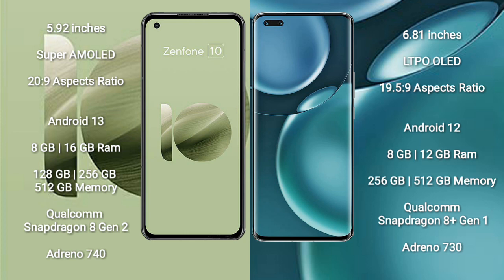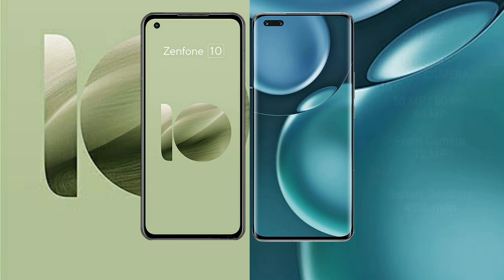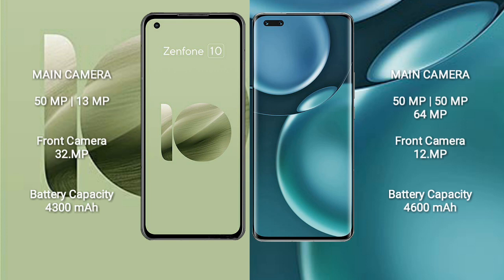Honor Magic 4 Pro comes with 8GB or 12GB RAM and 256GB or 512GB internal storage. It runs on the Android 12 operating system with a Qualcomm Snapdragon 8 Gen 1 processor and Adreno 730 GPU.